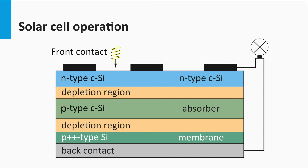The light enters the solar cell from the front side — in this illustration, that is the top side. The light is transmitted into the absorber layer, where its energy is absorbed. The energy is used to excite charge carriers in the semiconductor material: a negatively charged electron indicated by the red dot, and a positively charged hole indicated by the blue dot. These charge carriers diffuse around and need to be separated, which occurs at the depletion region between the N and P-doped silicon and the depletion region at the back of the solar cell.